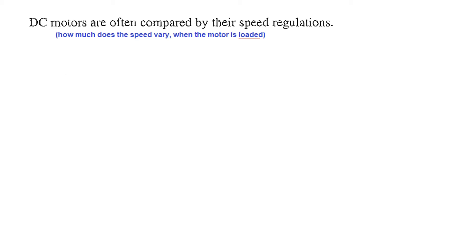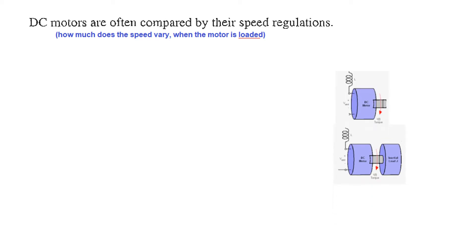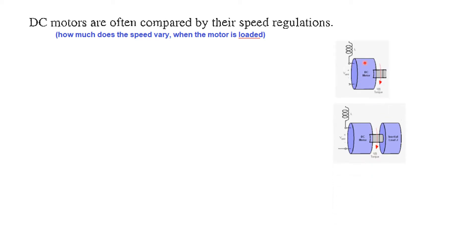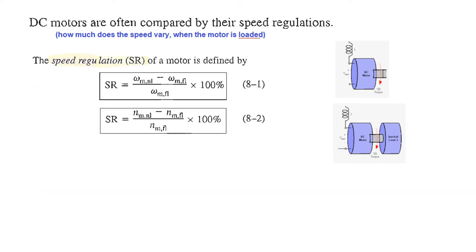Before going further, we will talk about what is called speed regulation — that means how much does the speed vary when the motor is loaded. Consider a scenario: a DC motor is not loaded and running freely, and then a load is attached. We want to see how much the speed changes because of this application of load, which is determined by speed regulation.